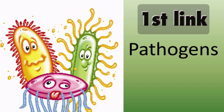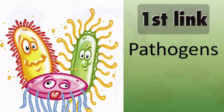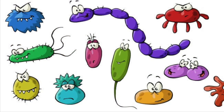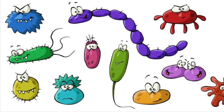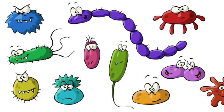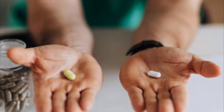The first link is the pathogen or the infectious agent. These are organisms that have the ability to cause disease. There are different types of pathogens: commonly the virus, bacteria, fungi, protozoa, and worms. To break this chain, seek prompt treatment if you are ill. Proper treatment is one of the best options to stop the pathogen from growing.